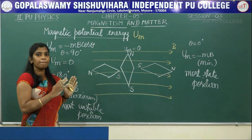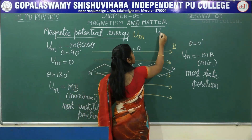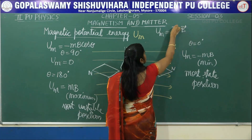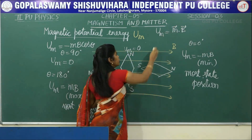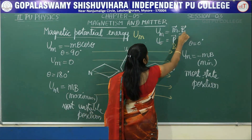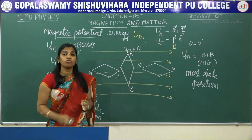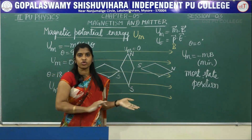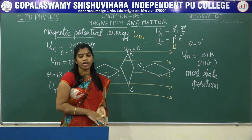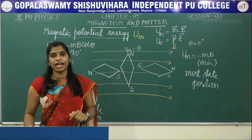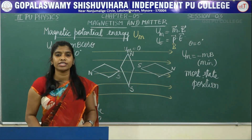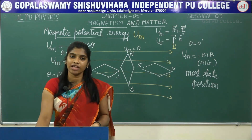You can compare this magnetic potential energy with the electric potential energy, which is −P·E. Whatever we studied in electrostatics can be compared with magnetism. This is the end of the session. In the next session, we are going to move to the very important concept — the Earth's magnetic field. Thank you.